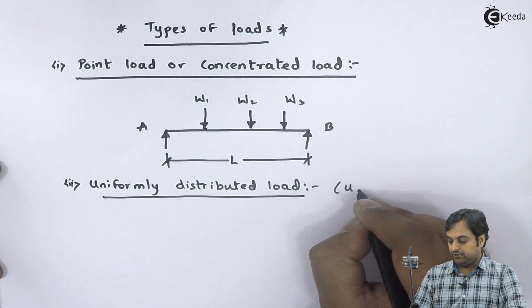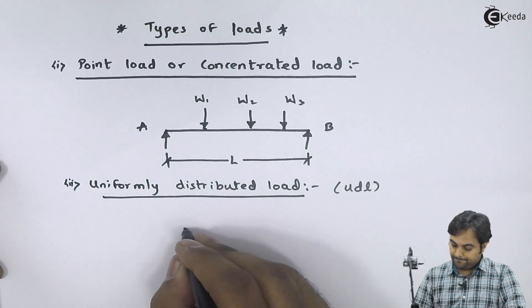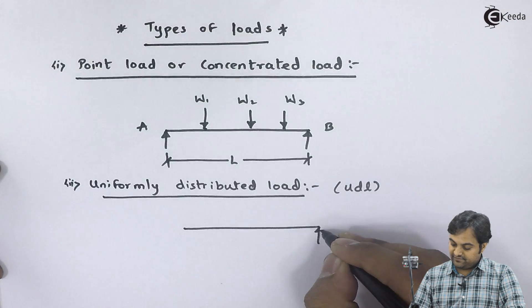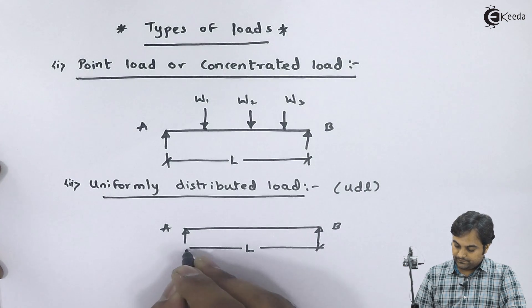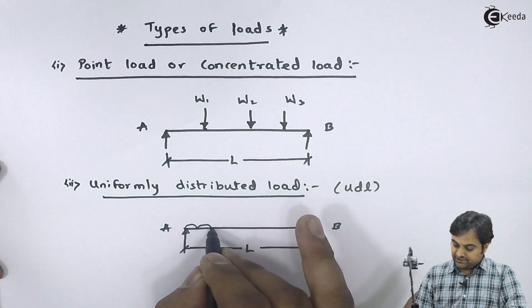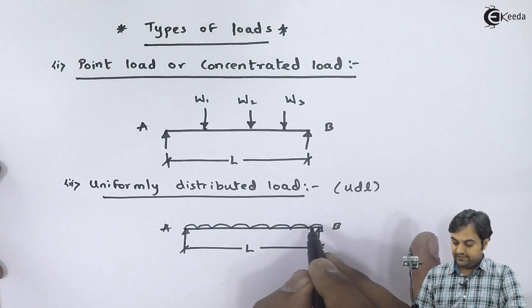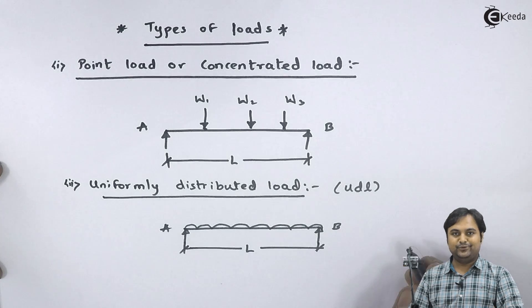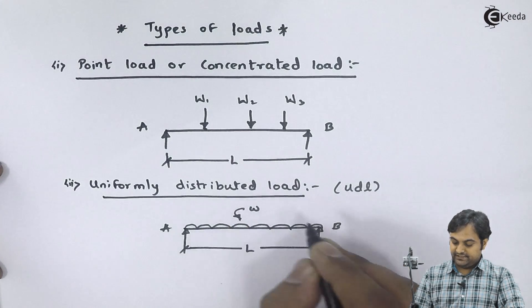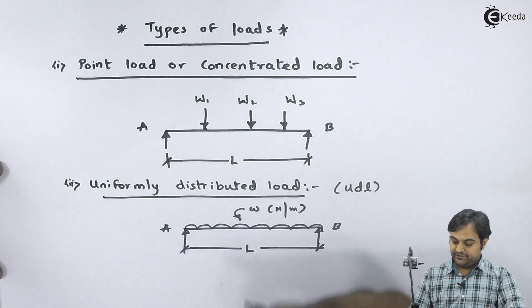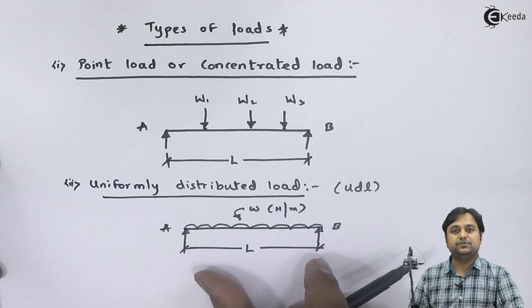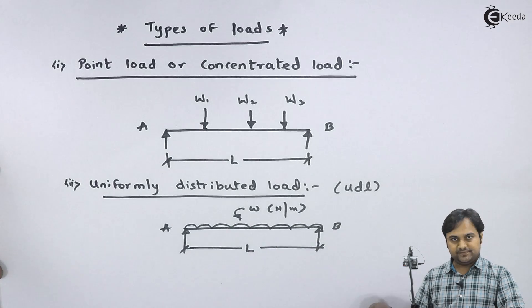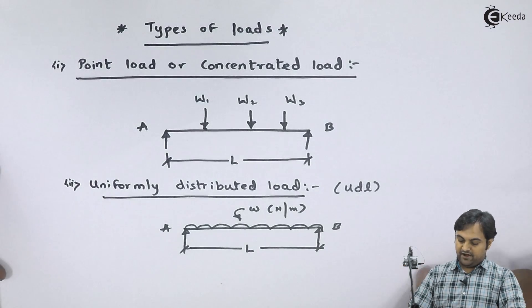Next is uniformly distributed load, also denoted as UDL. If we have a simply supported beam AB having length L, then the uniformly distributed load is acting throughout the length of the beam. It is not acting at one particular point like a concentrated load — it is there throughout the beam and its intensity is given as w in terms of Newton per meter. We never use this UDL in problems as it is; we would be converting this UDL into a point load, which I will explain when we get into the problems.